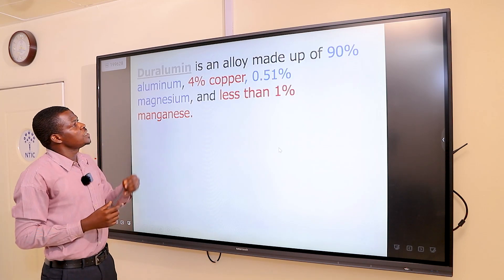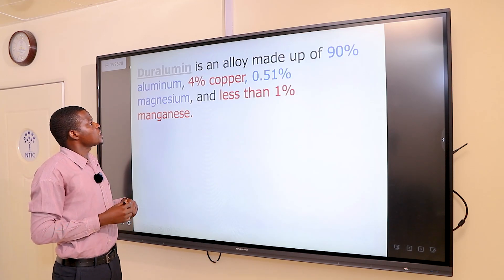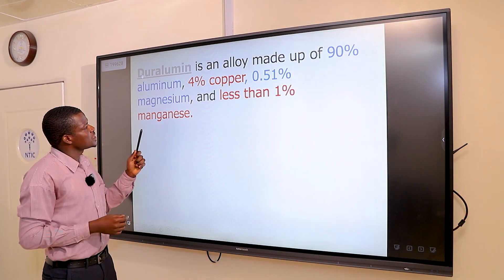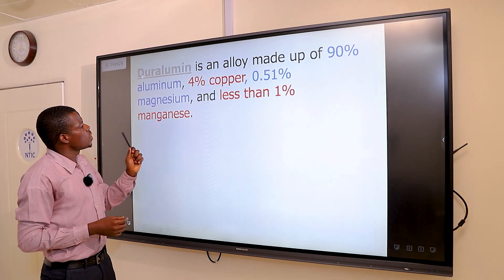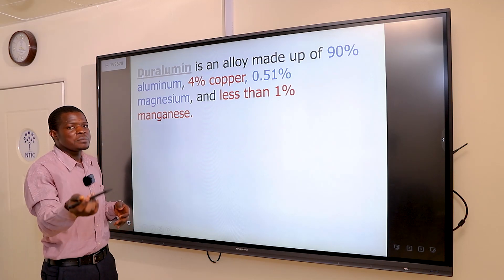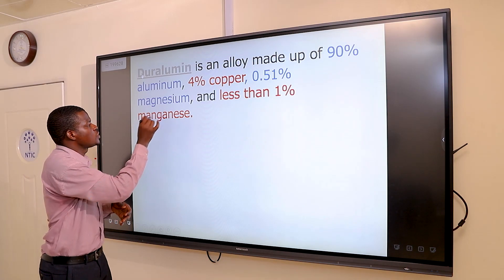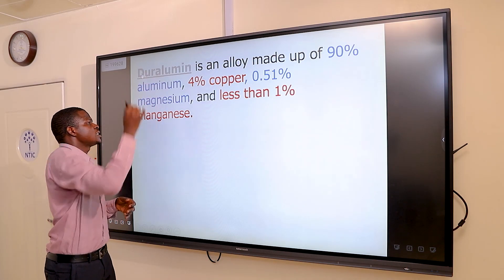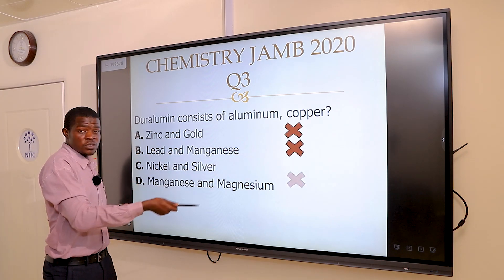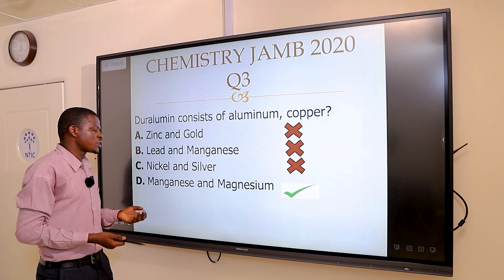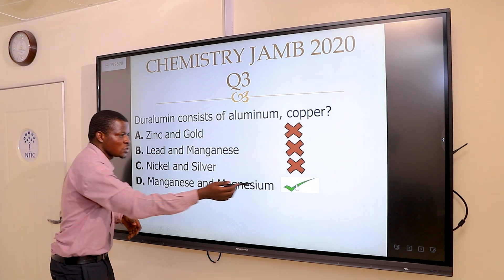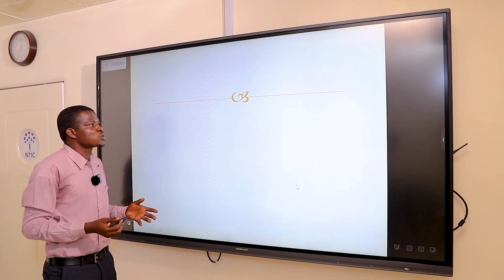A is wrong, but why? Duralumin is an alloy made up of 90% aluminum, 4% copper, 0.5-1% magnesium, and less than 1% manganese. From the question, we're given aluminum and copper, so the remaining elements must be magnesium and manganese. A is wrong, B is wrong, C is wrong, and obviously the correct answer must be option D.